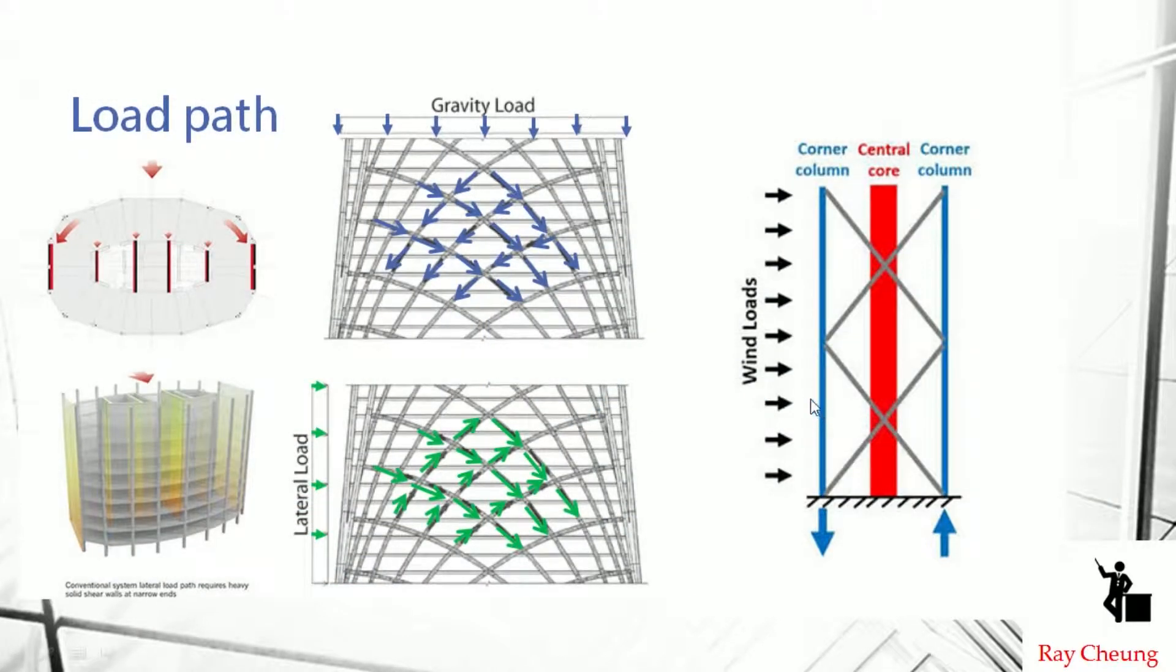This is the so-called load path system. Like the typical tall building, the gravity load will go down, they share together and go to the bottom. Then during the wind load they will have an up and down - sometimes in compression, sometimes in tension. They will transform the loadings. This is the typical system of the diagrid system.